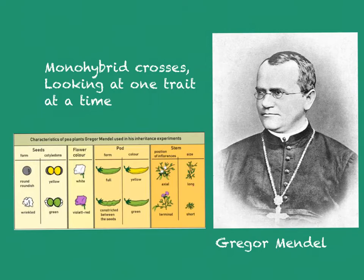For instance, he looked at things like the shape of the seeds — are they round or are they wrinkly? The color of the seeds — are they yellow, are they green? The flower color and so on. So peas were really good for looking at simple traits.